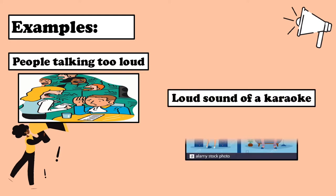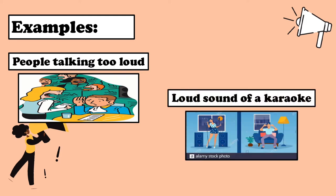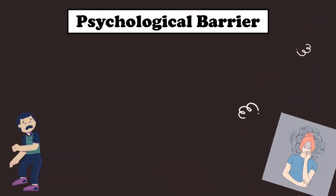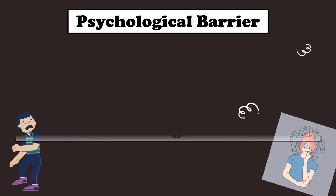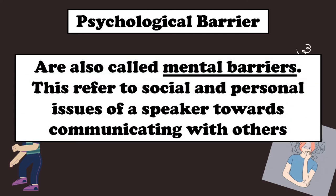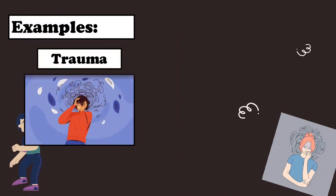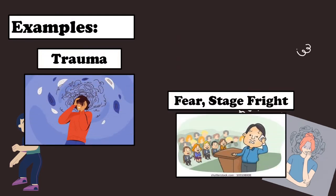The second communication barrier is called the psychological barrier. Psychological barriers are also called mental barriers. They refer to social and personal issues of a speaker towards communicating with others. Examples of psychological barriers are trauma and fear, or stage fright. The psychological barrier focuses more on the personal or inward feelings of a speaker.